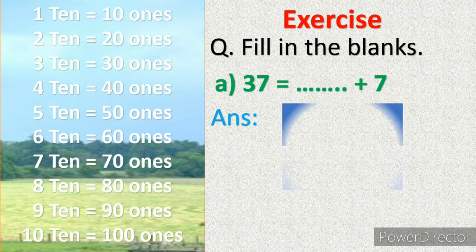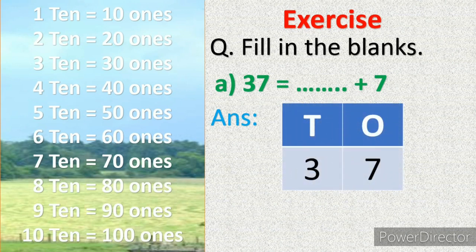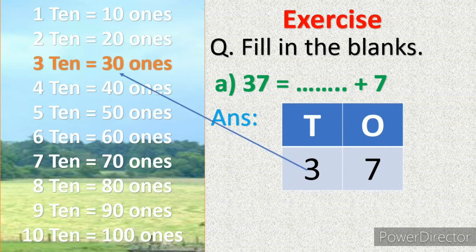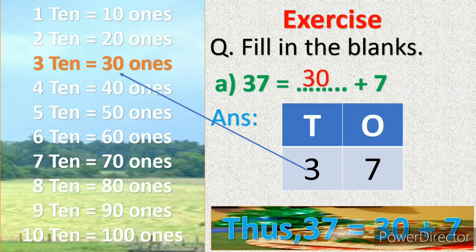First we will arrange the given numbers in ones and tens. We know that 3 tens equals 30 ones, so in the blank space there will be 30. Thus 37 equals 30 plus 7.